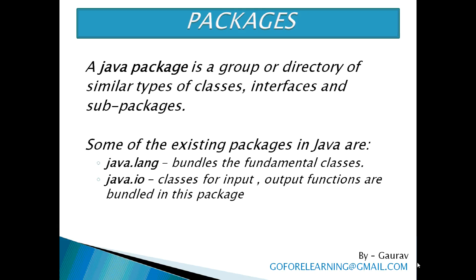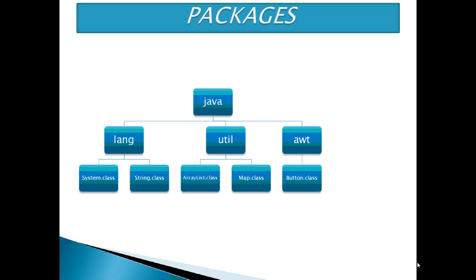Some of the existing packages in Java are java.lang, which bundles the fundamental classes, and java.io, where classes for input-output functions are bundled. There is a java package which contains sub-packages: lang, utils, and awt. The lang sub-package contains classes such as System.class and String.class. Similarly, other sub-packages have some classes as mentioned here.